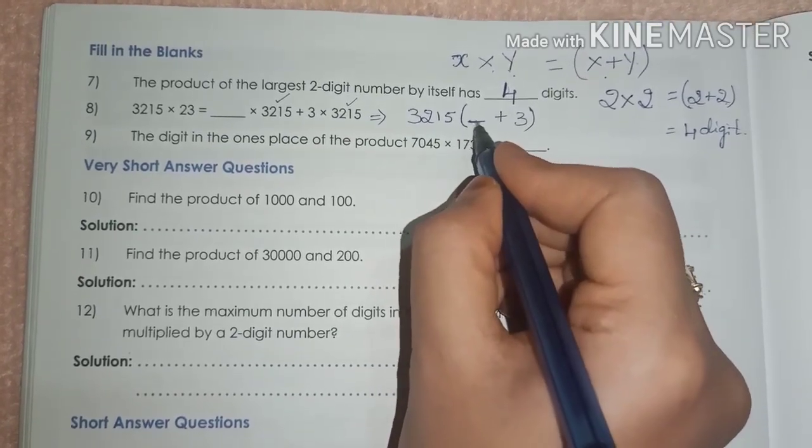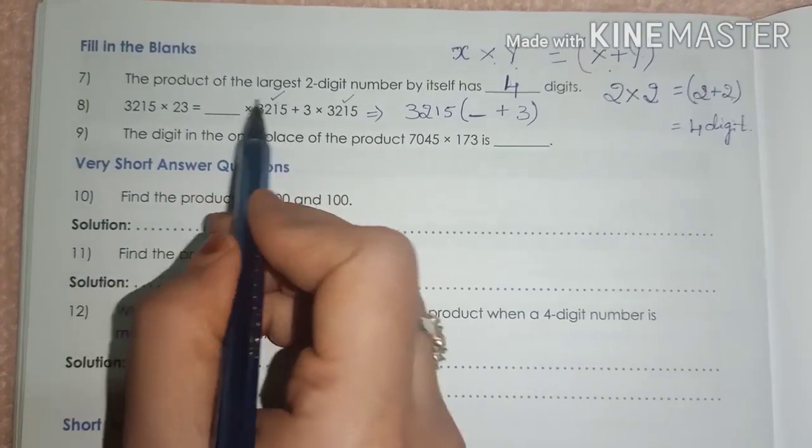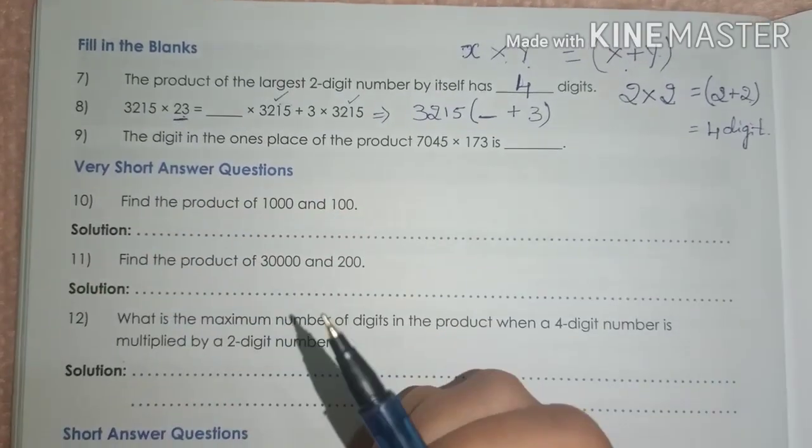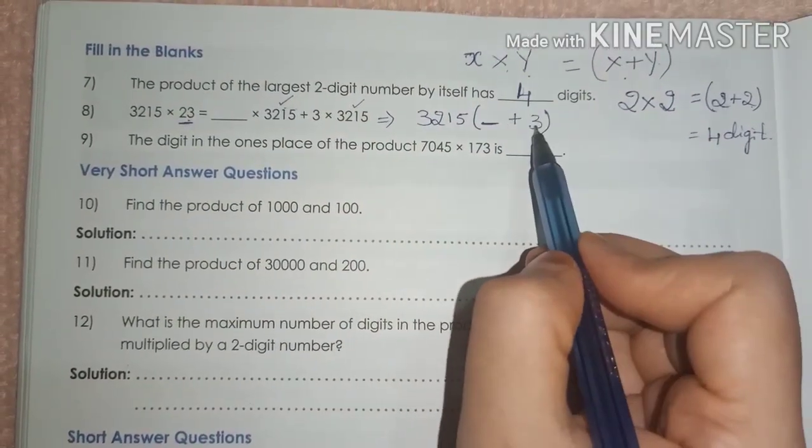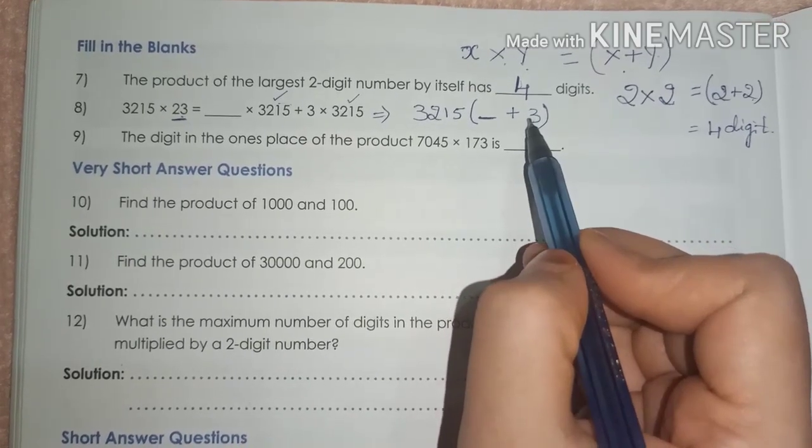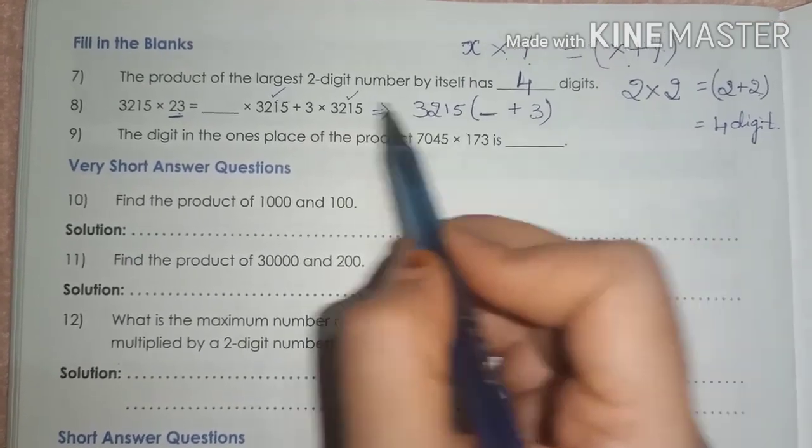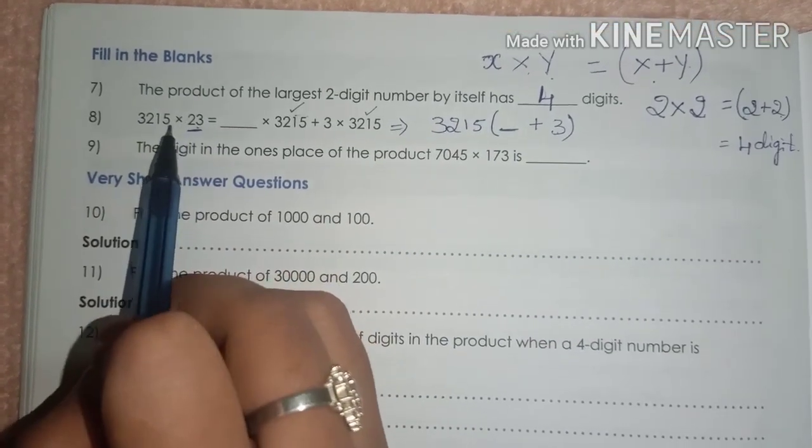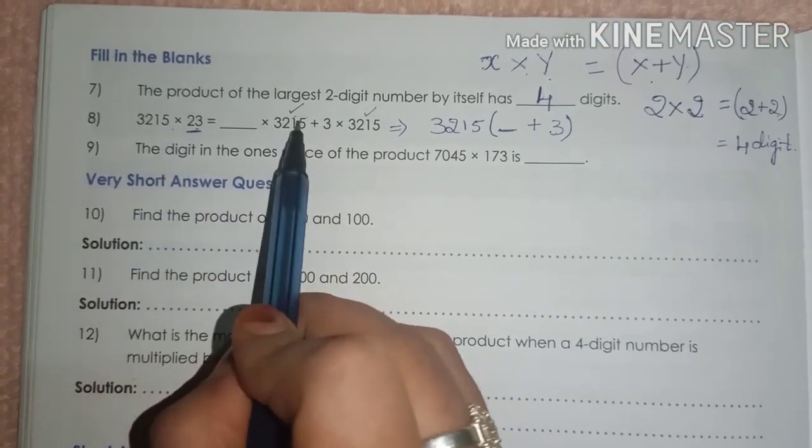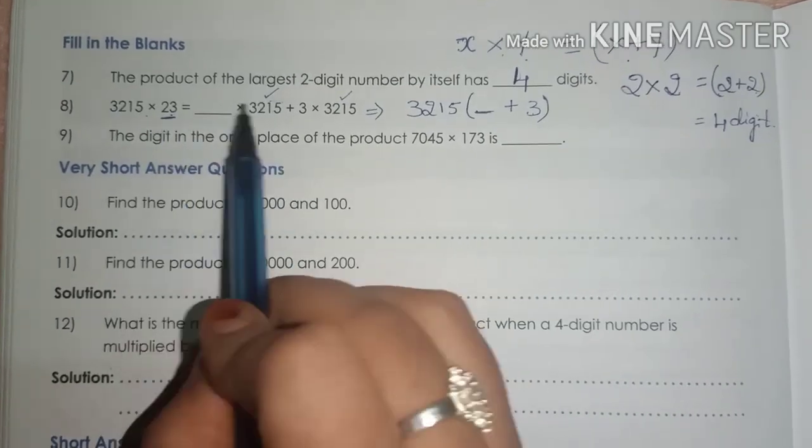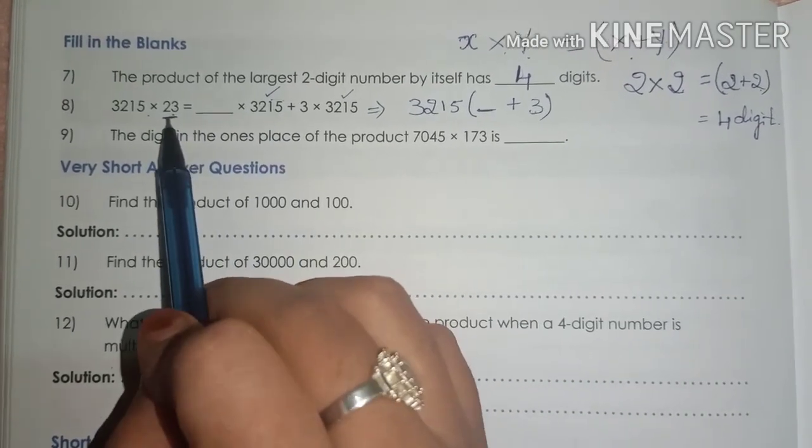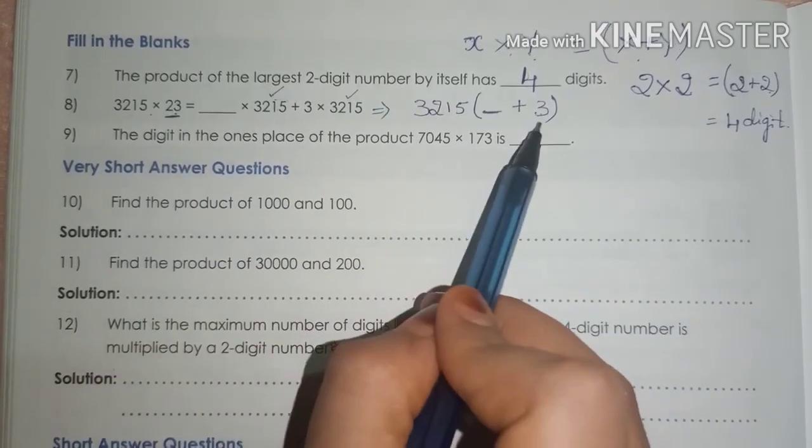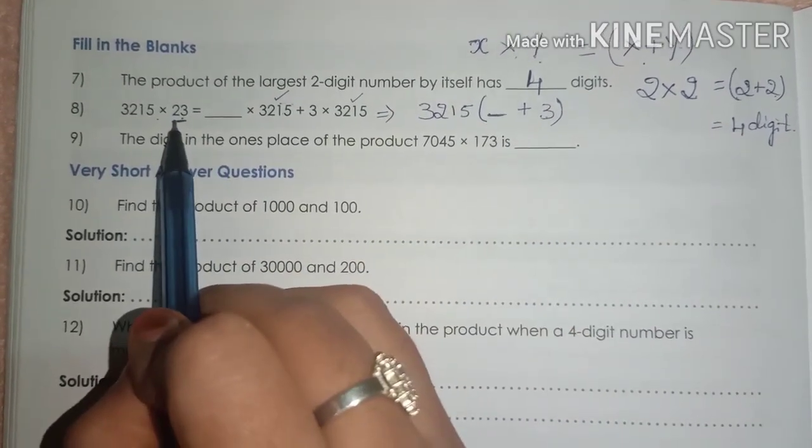We don't know what number is here. Now, when you compare to the LHS side, the LHS side is 23. So, here it is only 3. What should be added to 3 to get the answer as 23? LHS means left-hand side should be equal to the right-hand side. When you are equating this, see what should be added to 3 to get the answer as 23.